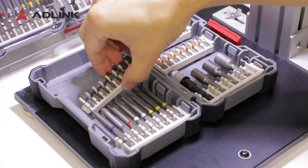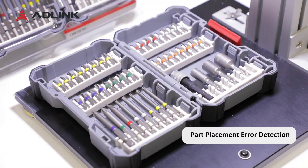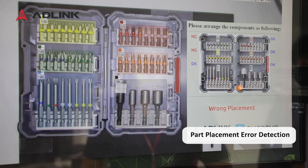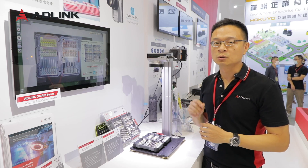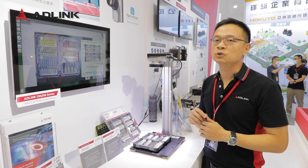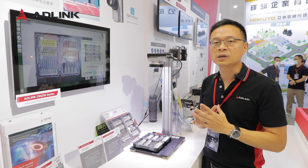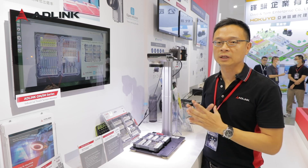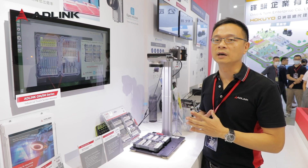The other possible error is the wrong placement. If this also happens, the system can also detect and give the alert automatically. The concept of this solution is using AI technology to detect the object types, quantity, and location. With this information, engineers can build an automatic vision solution to detect this on the production line to avoid people's missing and error.